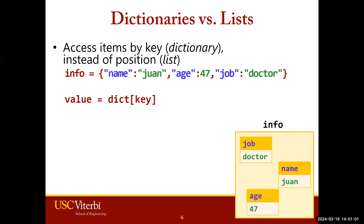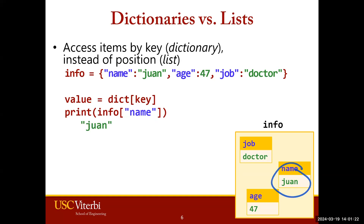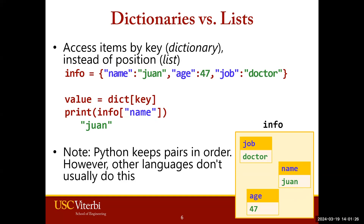So if we want to access information from our info dictionary — more specifically the value associated with the name key — we would provide the name key within the brackets. The value that would be printed would be Juan based on this key-value pair. Note that Python keeps these pairs in order, but other languages don't necessarily do this, so it's more important that you understand the key-value pair structure used for dictionaries.